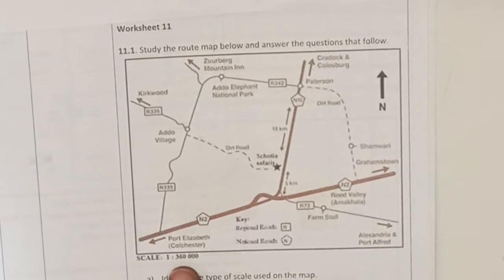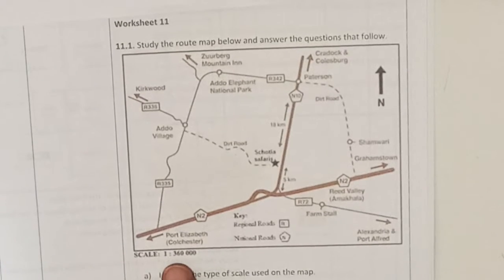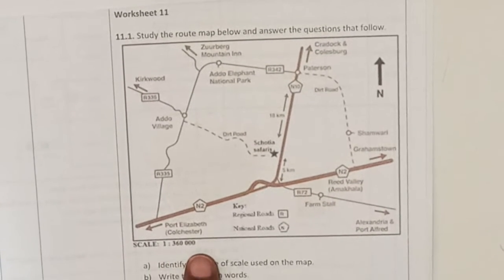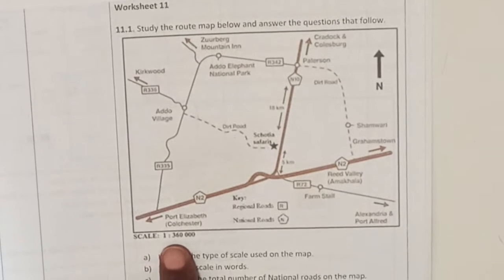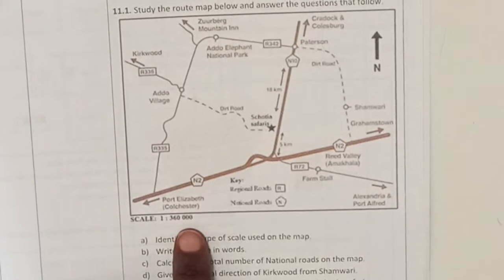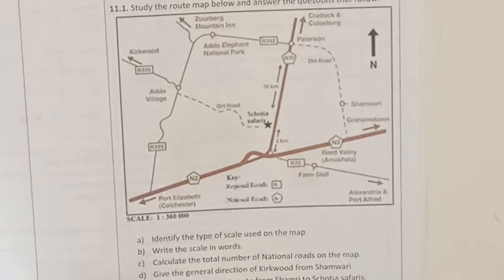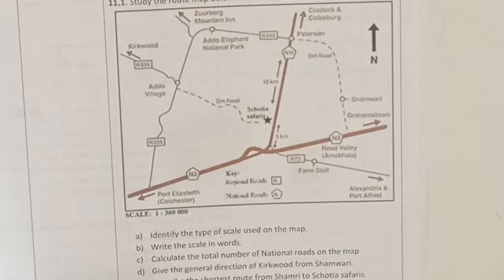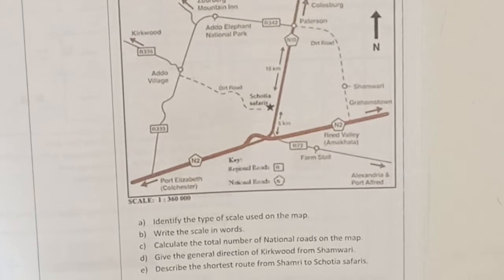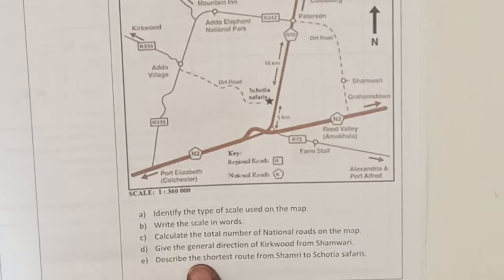They've also given you a scale. The scale is 1 to 360,000, meaning one unit on the map is equal to 360,000 units in real life. You use this to interpret the map and find out how far the actual distance is.